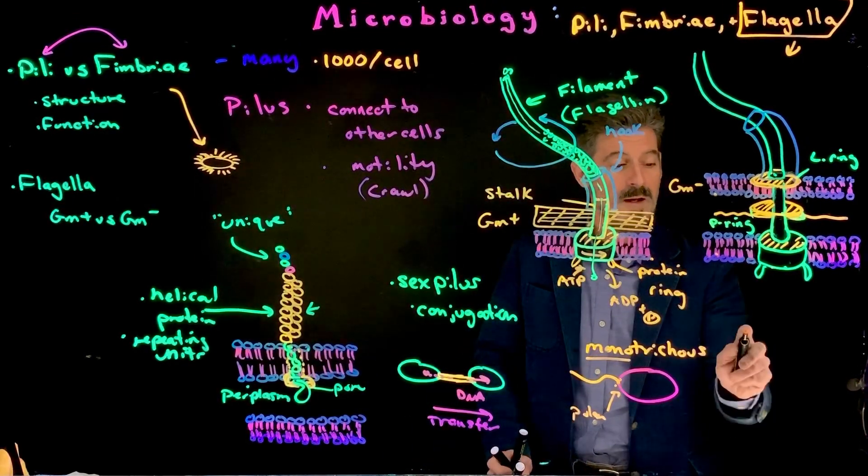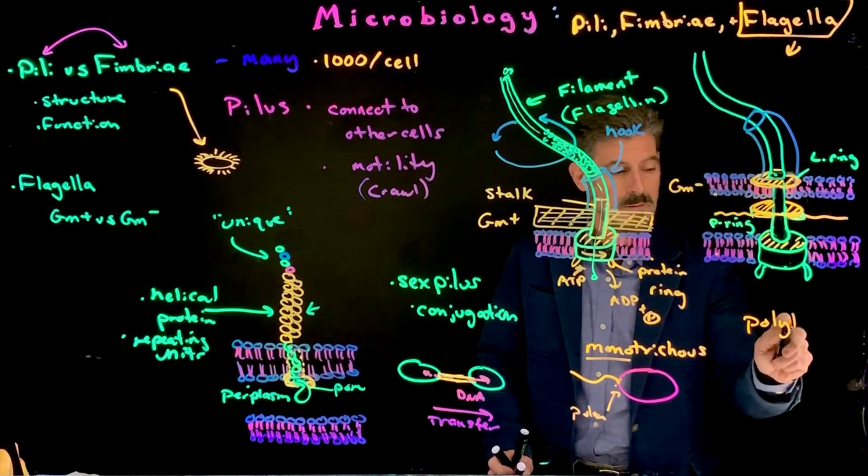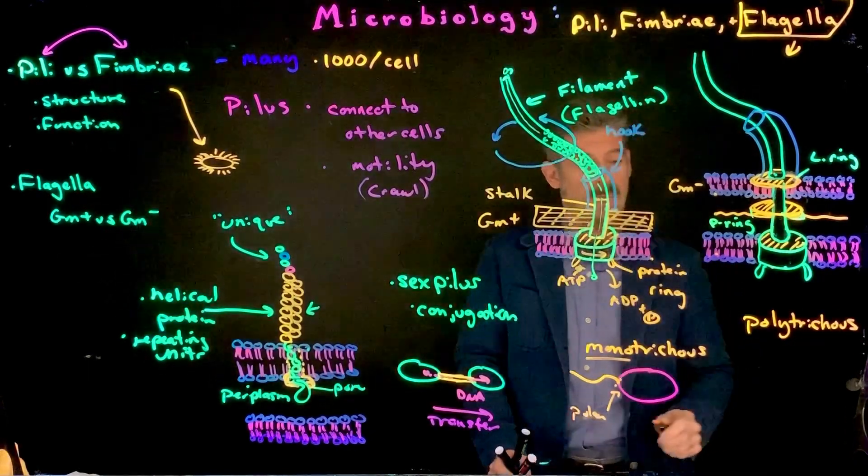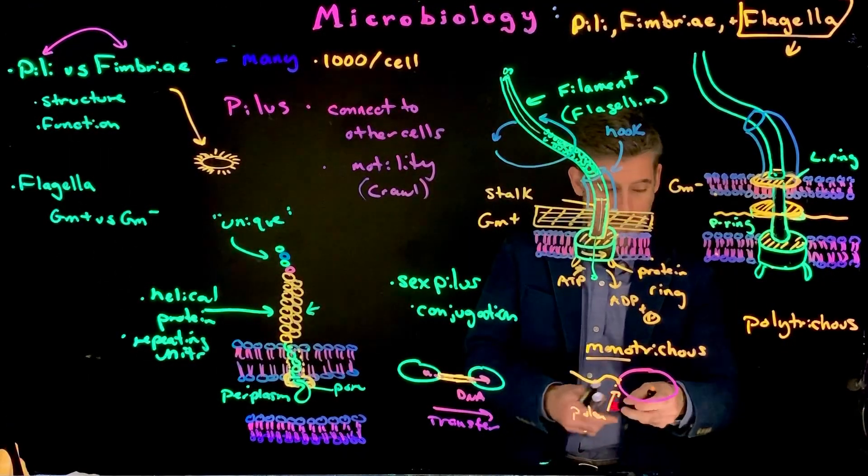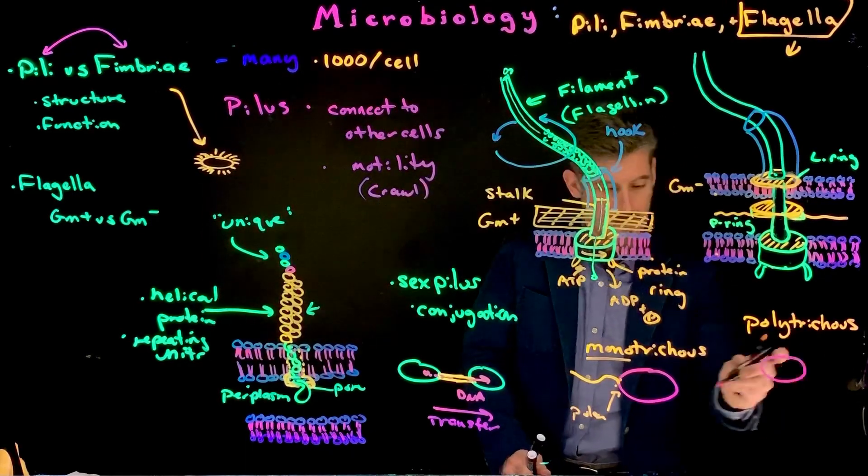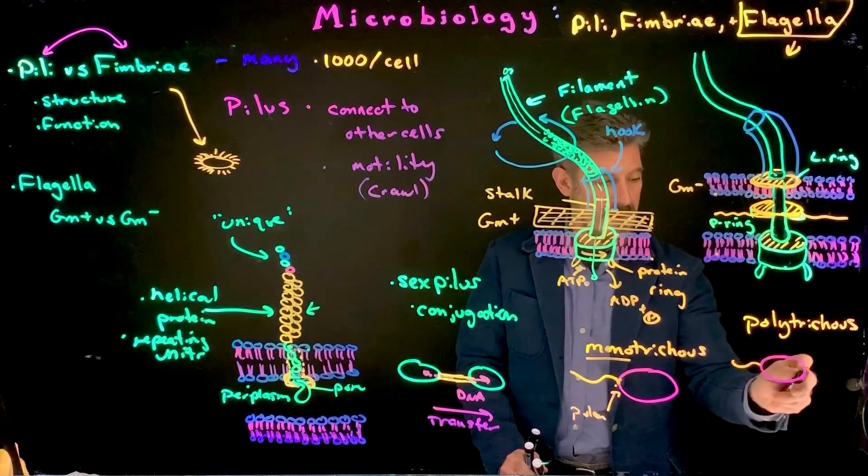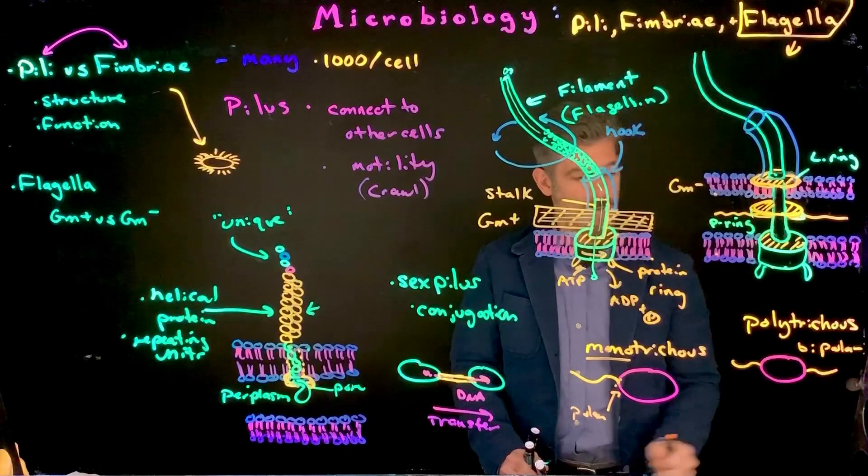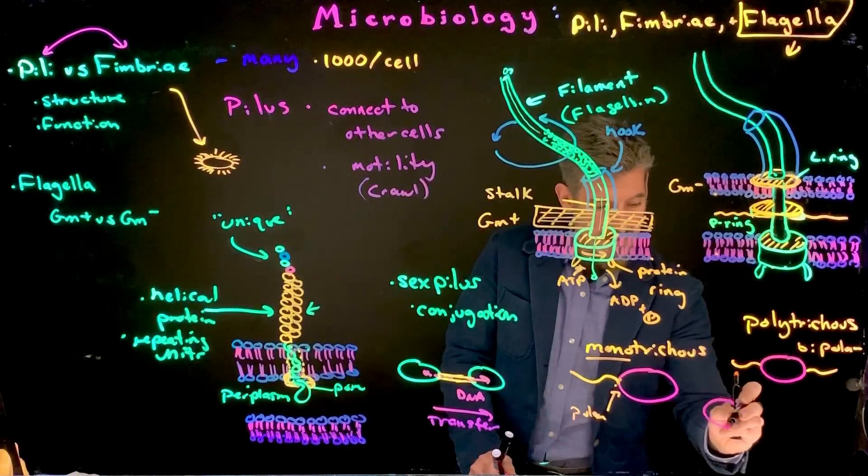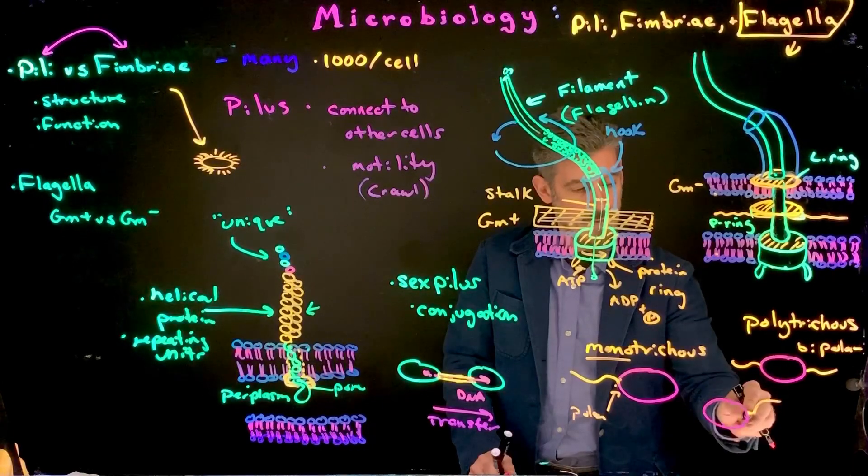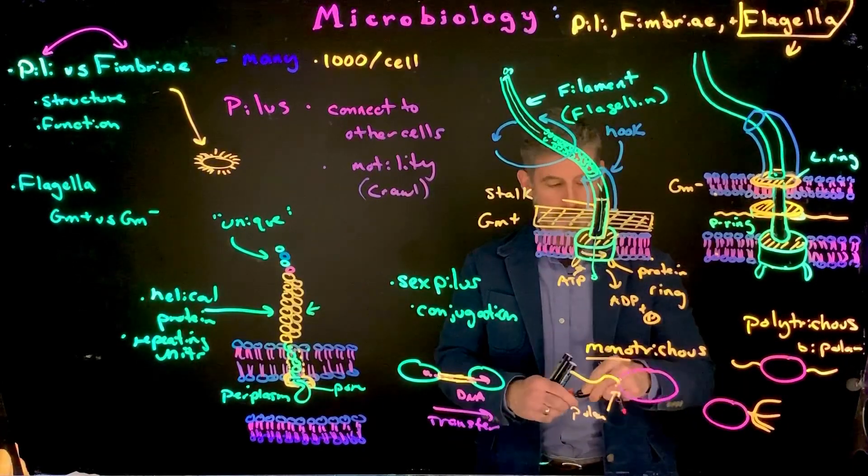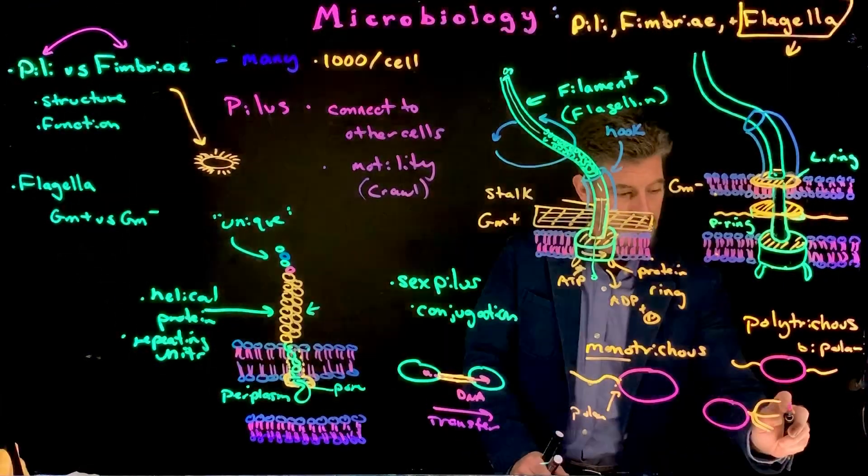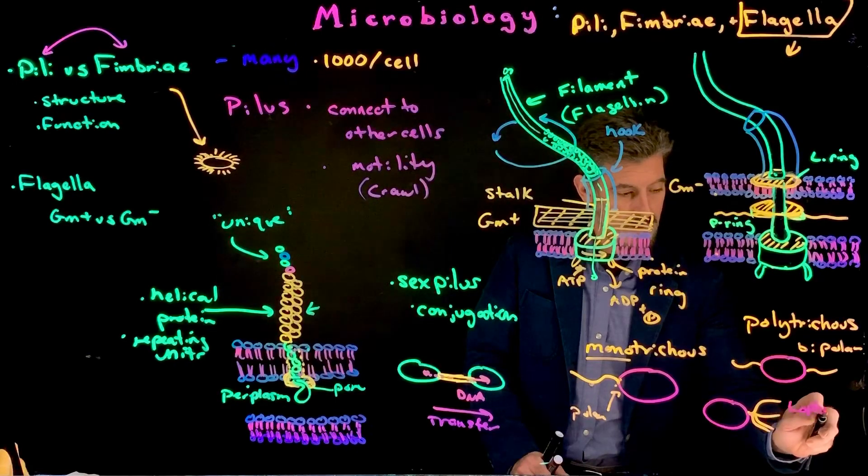We can also have flagella be polytrichous. Polytrichous flagella can be kind of simple like this, where you have just one at each pole, so a bipolar flagella. But we can also have the flagella in a tuft, like this. So, there are multiple flagella, but they're all originating from the same point. That's called lophotrichous.